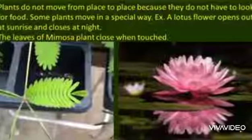Animals such as dogs, calves, and human beings walk with the help of their legs. Birds and bees fly with the help of their wings. Fish move with the help of their fins. Wild plants do not move from one place to another because they don't have to look for food.